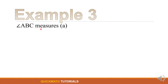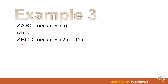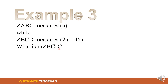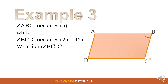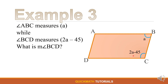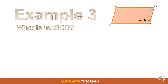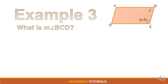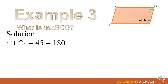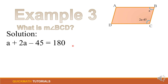For our last example: angle ABC measures a while angle BCD measures 2a − 45. We want to find the measure of angle BCD. In the figure, angle B = a and angle C = 2a − 45. As you can see, angles B and C are consecutive angles. By the property that any two consecutive angles of a parallelogram are supplementary: angle B + angle C = 180 degrees. So a + (2a − 45) = 180.